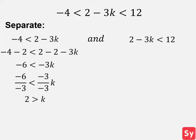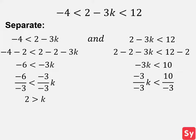Now we solve the next inequality. We first subtract 2 from each side, then simplify and get negative 3K is less than 10. Next, we divide each side by negative 3. We simplify and get K is greater than negative 10 over 3. Again, don't forget to change the direction of the sign, since we are dividing by a negative number.